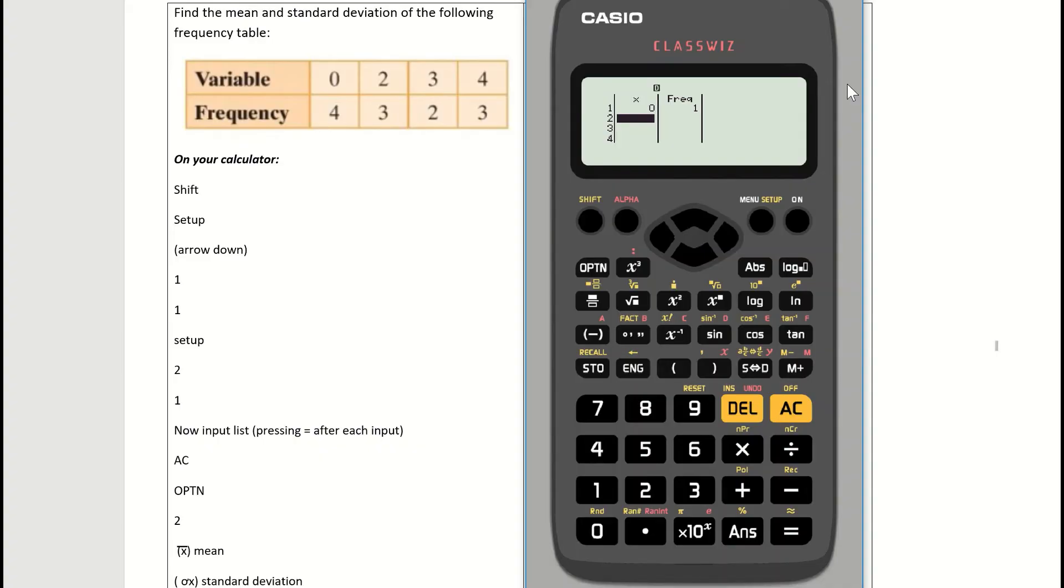You can see my variables are now input: zero, two, three, and four. But my frequencies all say one, so I need to change my frequencies.